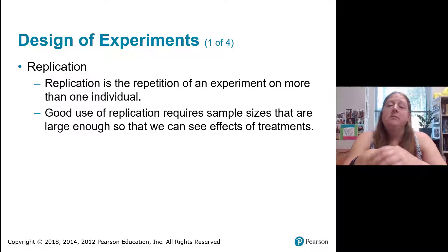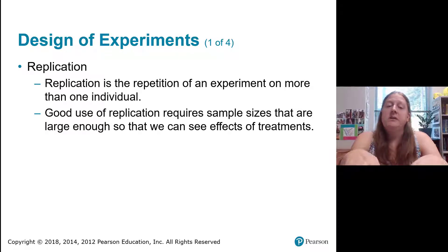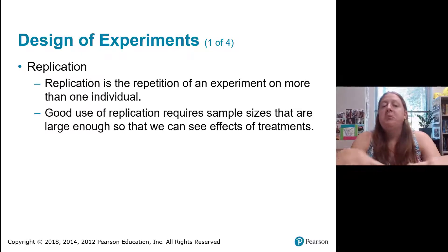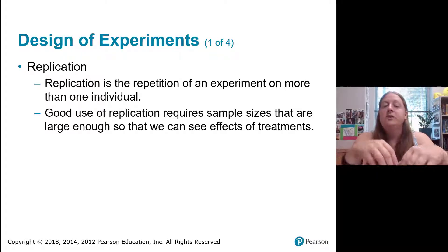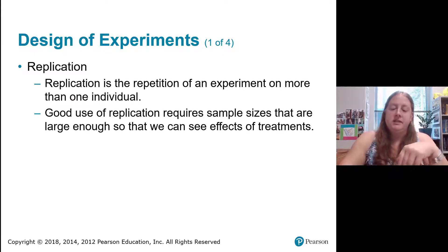As we think about designing experiments, there are several things to consider. The first is replication — the repetition of an experiment on more than one individual. This means we're able to apply the same treatment to more than one individual. Good use of replication requires sample sizes large enough so that we can see the effects of treatments.